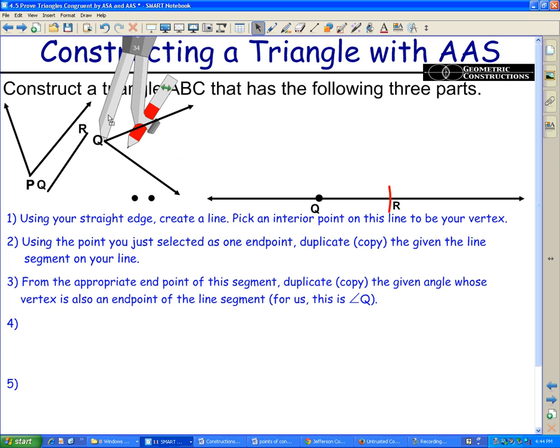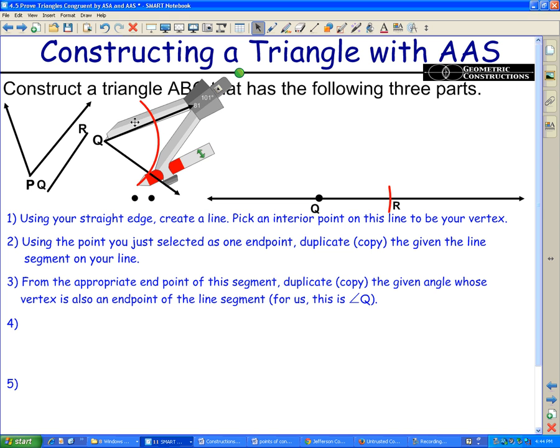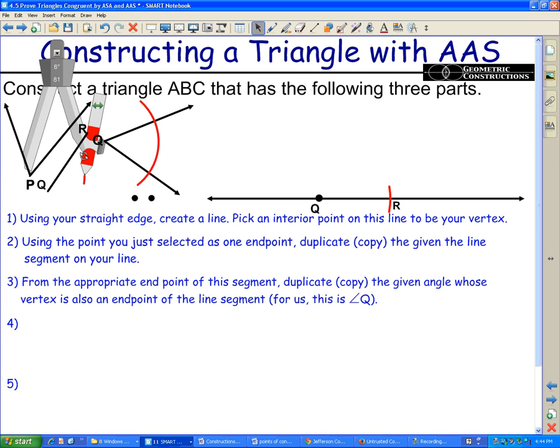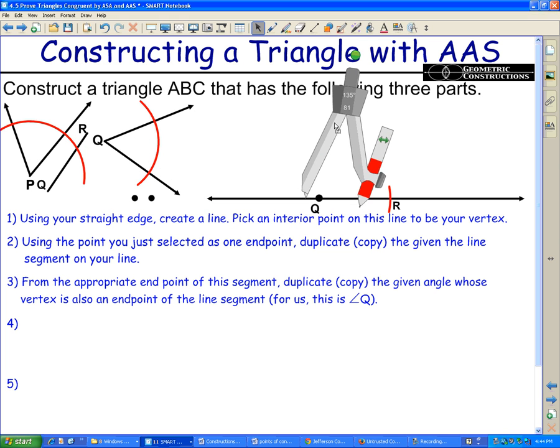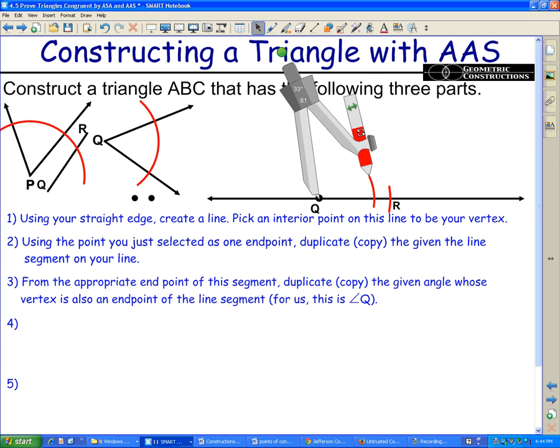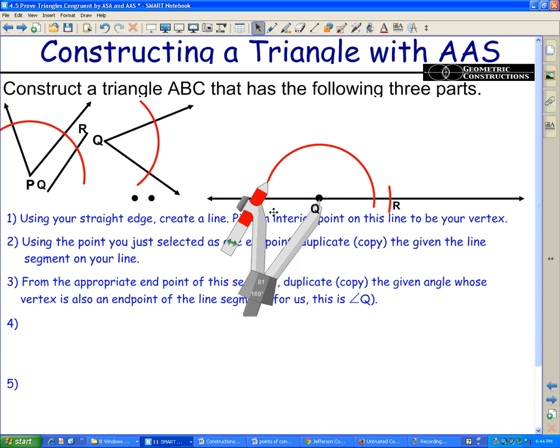But we now have vertex Q labeled. We can go ahead over to angle Q and proceed to make an arc through our angle so that we can duplicate our angle there. While I have this length, I'm just going to go ahead and come over to the other angle and make that same arc through there. I'm going to have to eventually measure angle P coming up here next, and so I'm going to use that arc length right there.